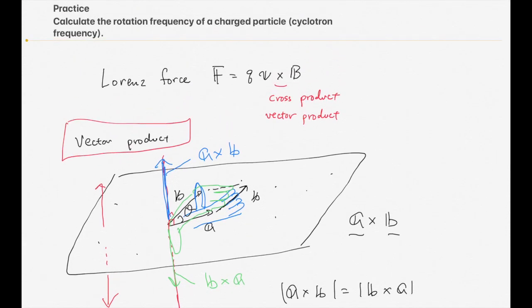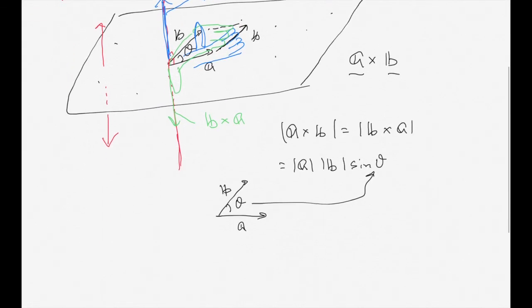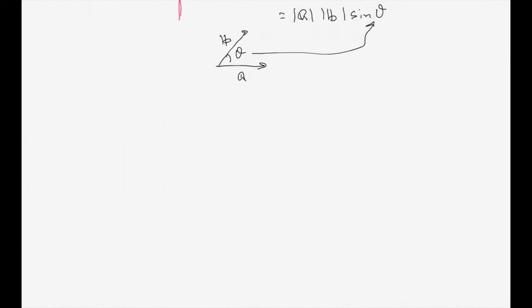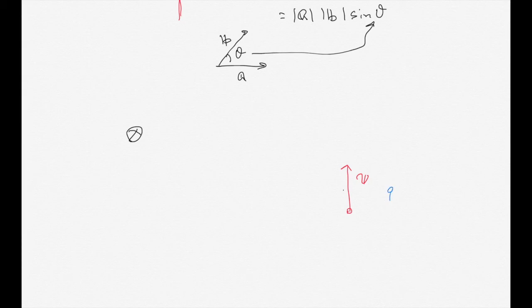The Lorentz force uses this vector product in its definition. So consider a charged particle: if the magnetic field is directed into the board and the charged particle is moving upward with velocity V, we want to find what direction the Lorentz force is acting. We use F equals Q times V cross B.